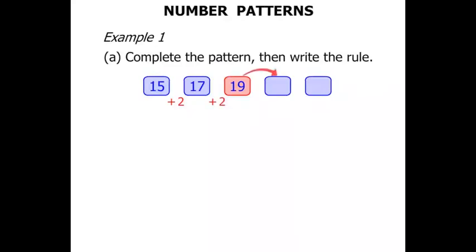So to go from 19 to the next number we're going to add 2, and 19 plus 2 is 21. From 21 to get to the next number we add 2. 21 plus 2 is 23. So we've completed the pattern. Now for the rule, the rule quite simply is that we added 2. Great!